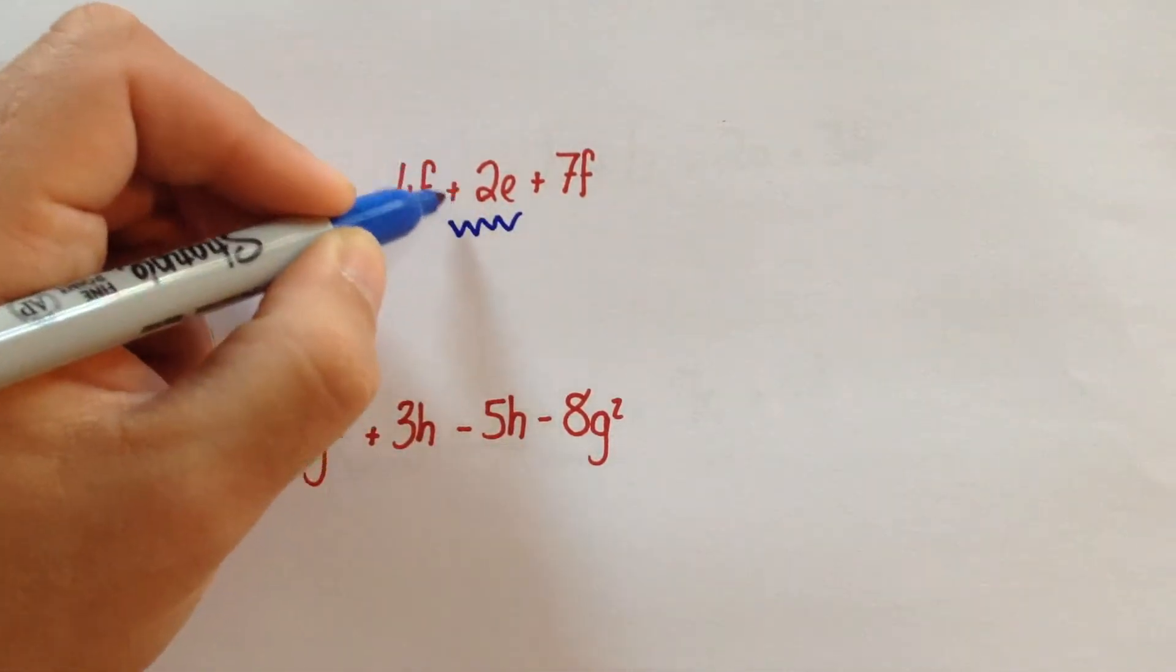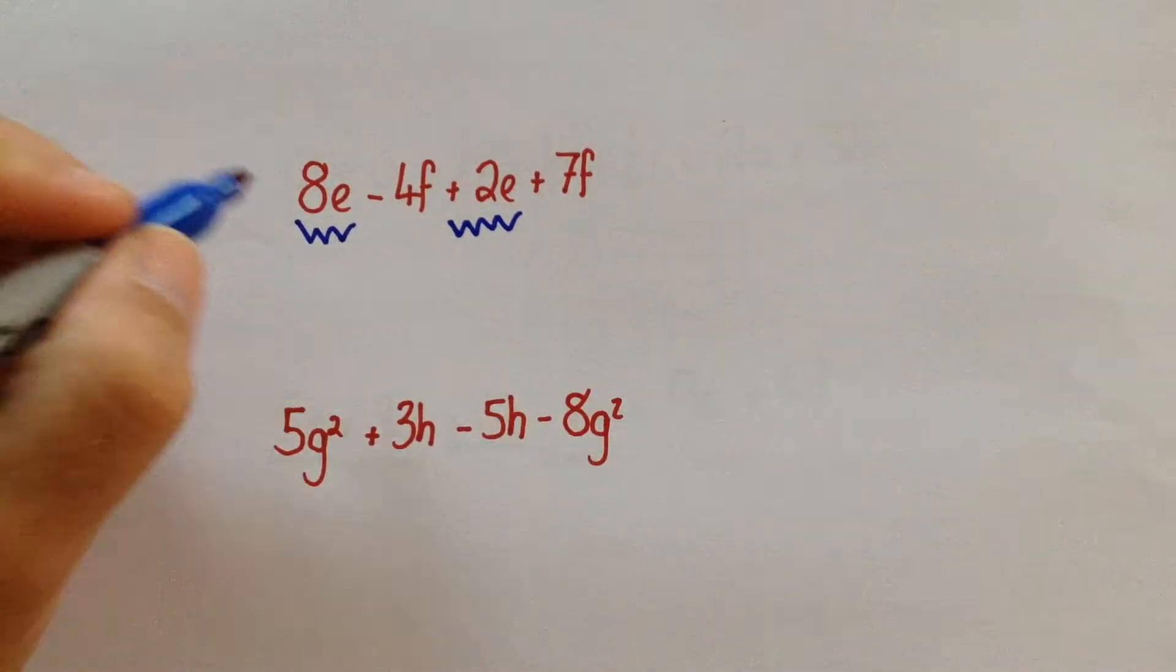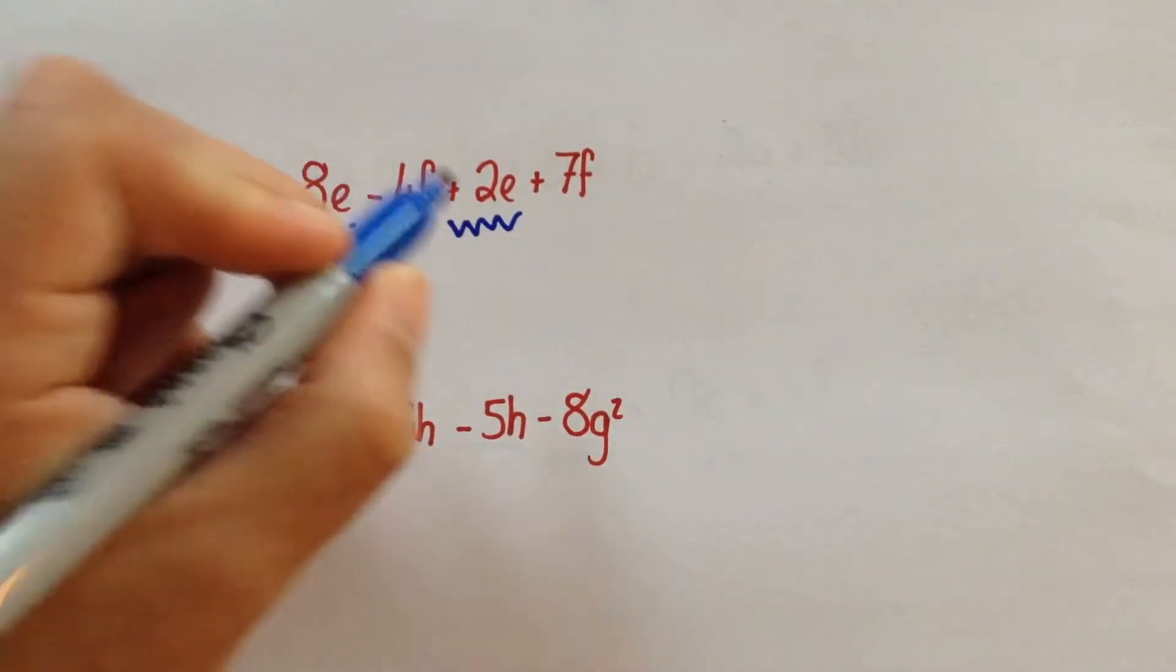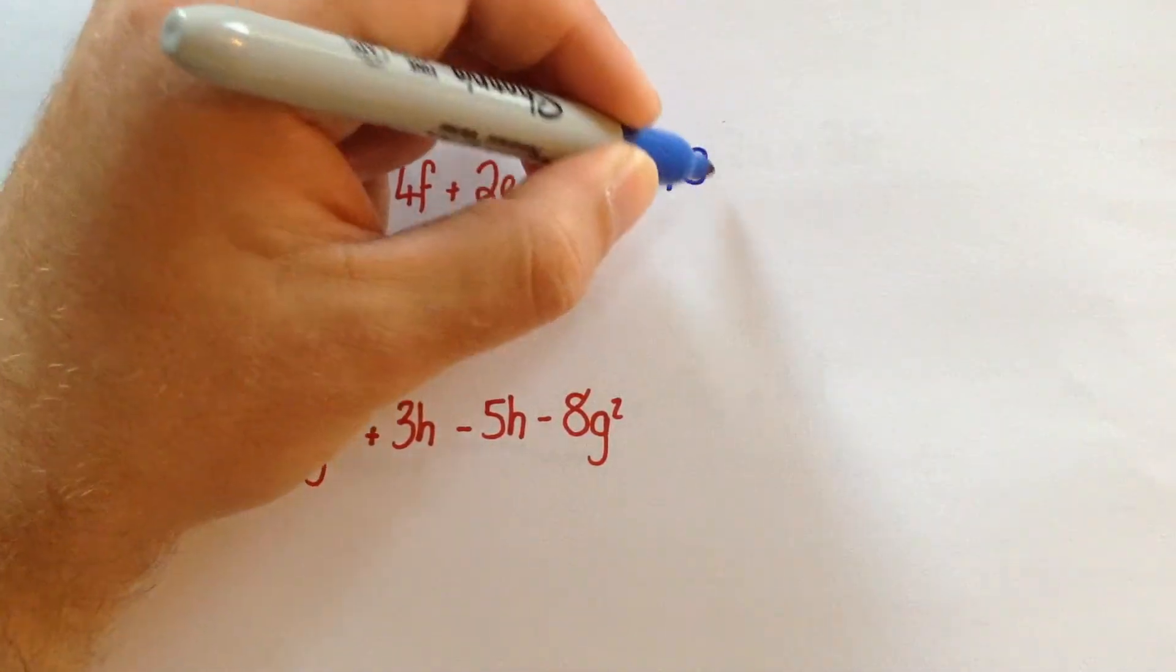And we know we are adding because we always look at the symbol in front of the term that we are using. So here, we've got 8E plus 2E, which would give us 10E.